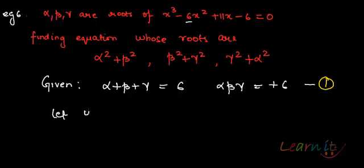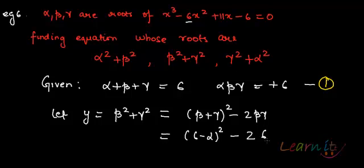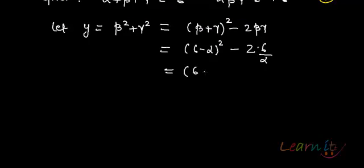Let y = β² + γ². This equals (β + γ)² - 2βγ. Now I can get everything in terms of α. Since β + γ = 6 - α, we get y = (6 - α)² - 2·(6/α), which gives y = (6 - α)² - 12/α, using equation 1.